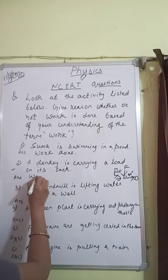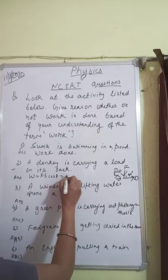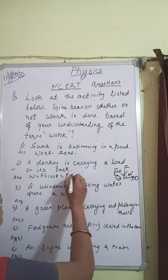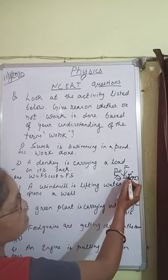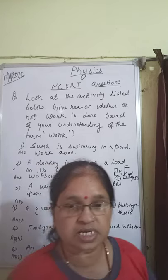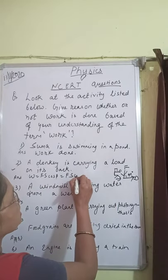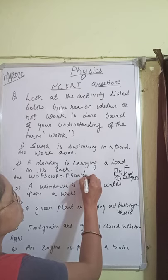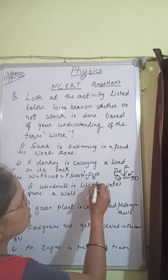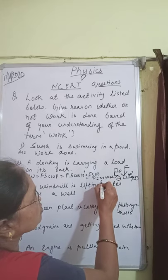We have studied W = F S cos θ. Weight is acting downwards, S is the displacement as the donkey moves forward, and the value of θ is 90 degrees. As explained in the previous class, when θ = 90°, cos θ becomes 0. So W = F S × cos 90° = F S × 0 = 0. This results in no work done.